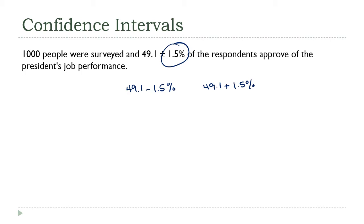A confidence interval is a numeric range that we're reasonably confident contains the actual proportion for the entire population. That highlights the goal: we want to know what the value of a parameter — like a proportion or mean — is for the entire population, but all we have to work with is the corresponding statistic calculated from a sample. Confidence intervals are a tool we can use to make a statement about the population parameter based on what we know from our sample.